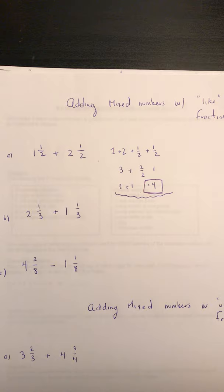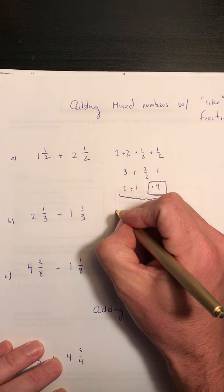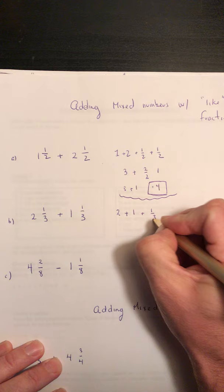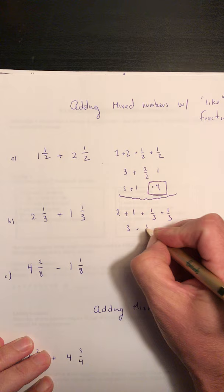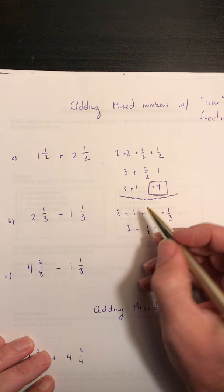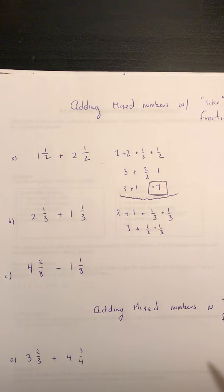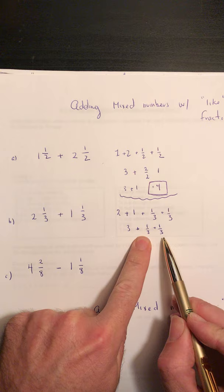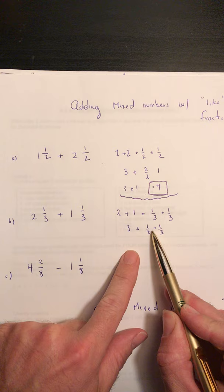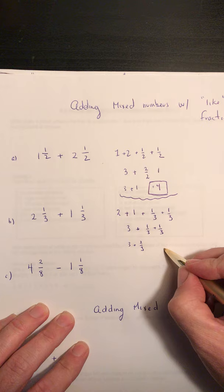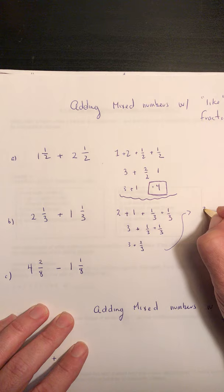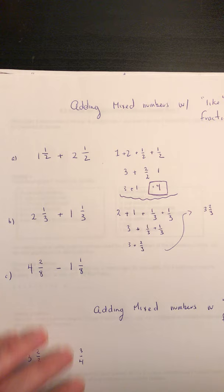Let's do this other one. We've got two and one-third plus one and one-third. Let's rearrange: two plus one plus one-third plus one-third. Two plus one is three. Now we have like fractions — like denominators — so we add the numerators: one plus one is two. So we have three plus two-thirds. Our answer is two and one-third plus one and one-third equals three and two-thirds.